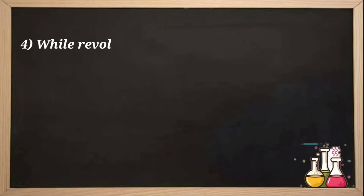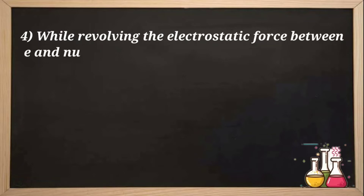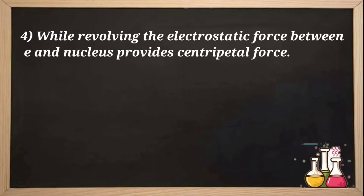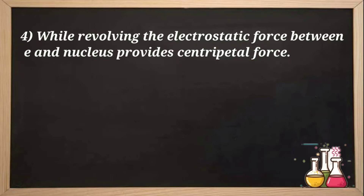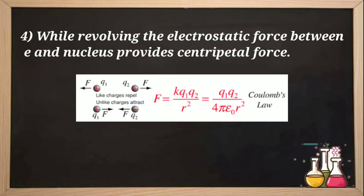The fourth postulate was that while revolving, the electrostatic force between the electron and nucleus provides the centripetal force. This postulate deals with two kinds of forces: the electrostatic force and the centripetal force. The electrostatic force is involved whenever we check the force between two types of charges — like charges or unlike charges. When we talk about the electron, the electrostatic force involves the electron and the nuclear charge under a force of attraction.